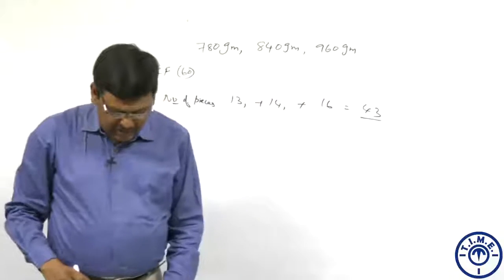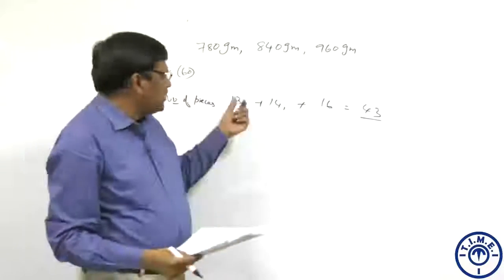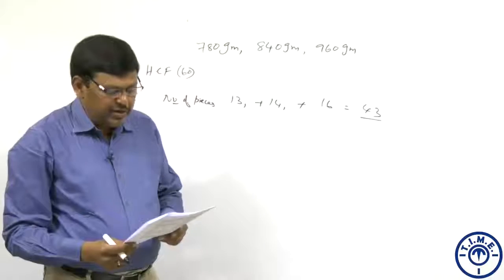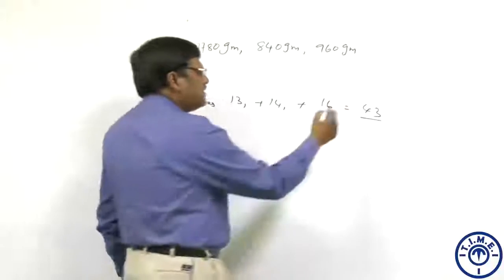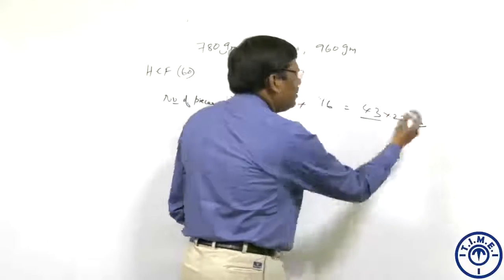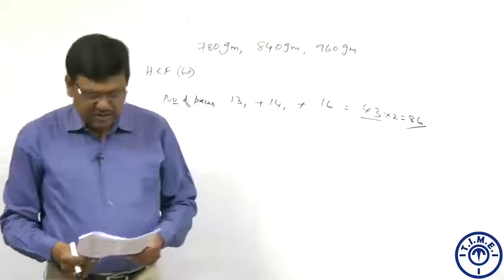And the question says that each piece is shared to two people, two children. So how many children can the pieces be given? One piece is given to two children means 43 pieces will be 43 into 2, to 86 children it is given. So my answer is choice A.